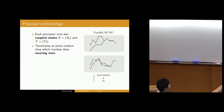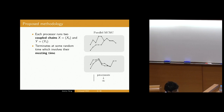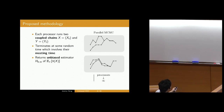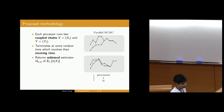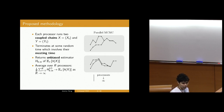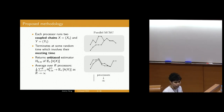We don't stop when the chains meet; you stop at some random time which depends on the meeting time. Each processor then returns an unbiased estimator which I'm denoting H subscript k colon m. K and m are two tuning parameters I will discuss. Based on the unbiasedness property, I can safely average over the estimators produced by each of the R processes to get an estimator that is consistent as I send the number of processes to infinity by the law of large numbers. Using the central limit theorem for IID random variables, we can also construct confidence intervals.